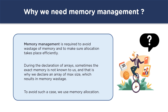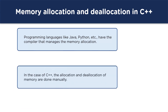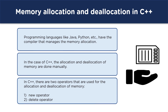Let's understand memory allocation and deallocation in C++. Other programming languages like Java and Python don't need to allocate memory dynamically. In C language we use the malloc or calloc functions to allocate memory dynamically at runtime, and these functions are also supported by C++. But in C++ allocation and deallocation is done manually. There are two operators used for this: the new operator and the delete operator.